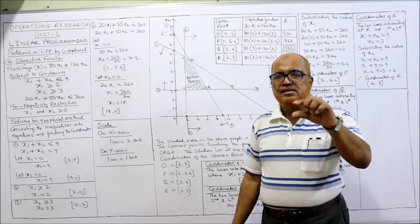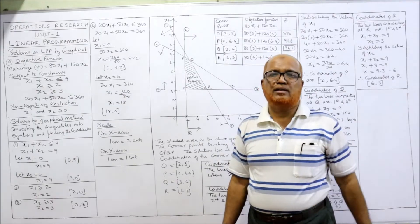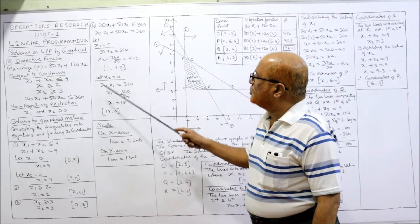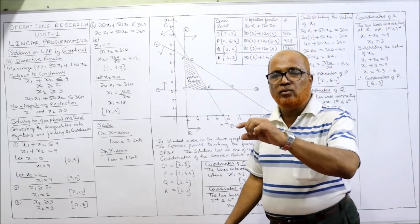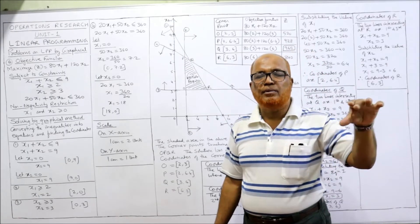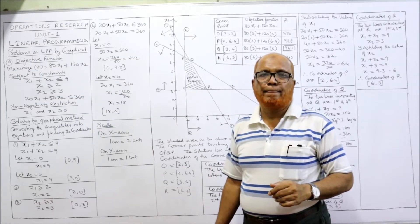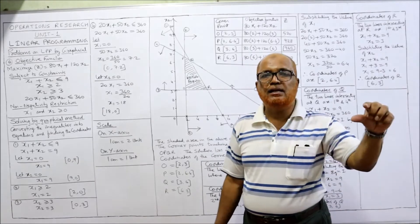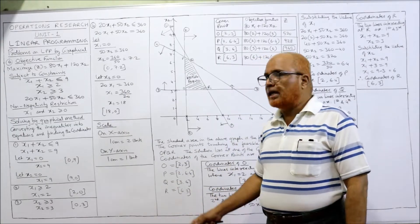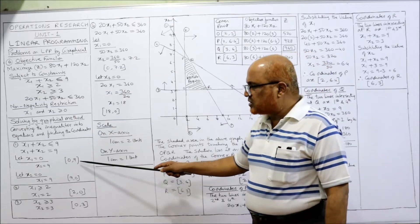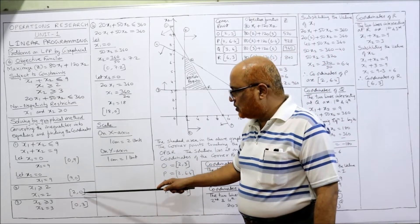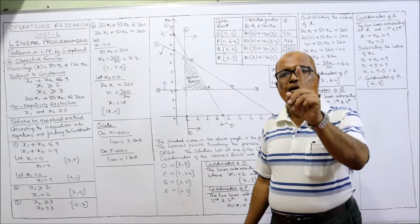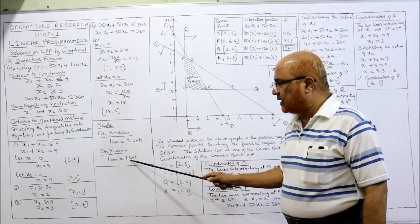Now we take the scale. On the x-axis we are taking x1, on the y-axis we are taking x2. The highest value of x1 is 18. If we take 1 cm = 1 unit, 18 cm are required — very difficult. So we make 1 cm = 2 units, so in 9 cm we can adjust 18 units. On y-axis the highest value is 9, so 1 cm = 1 unit.